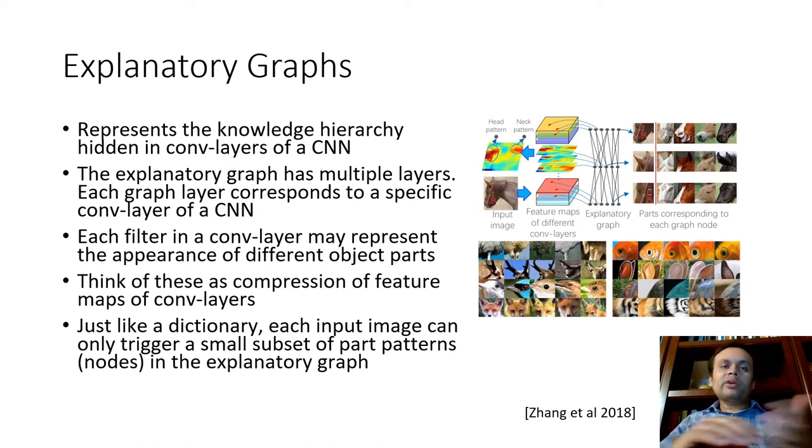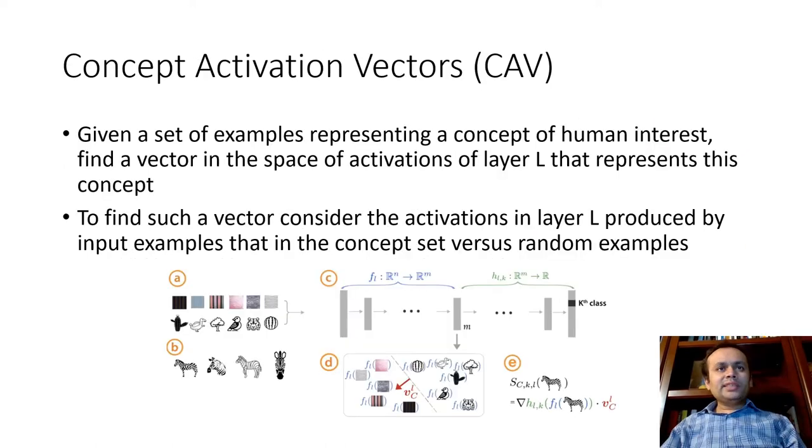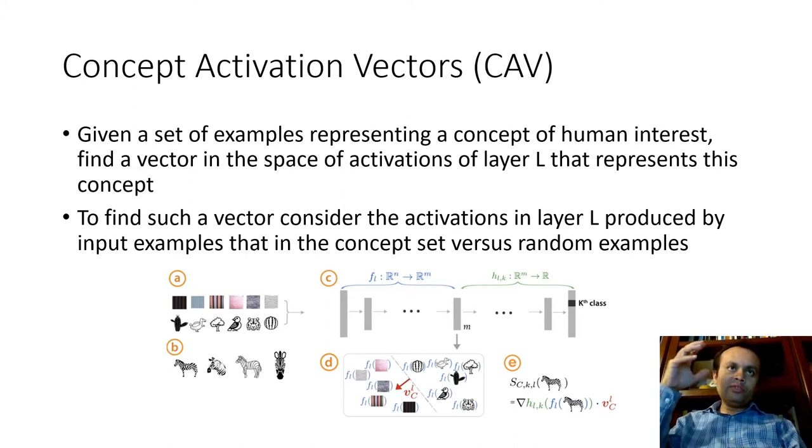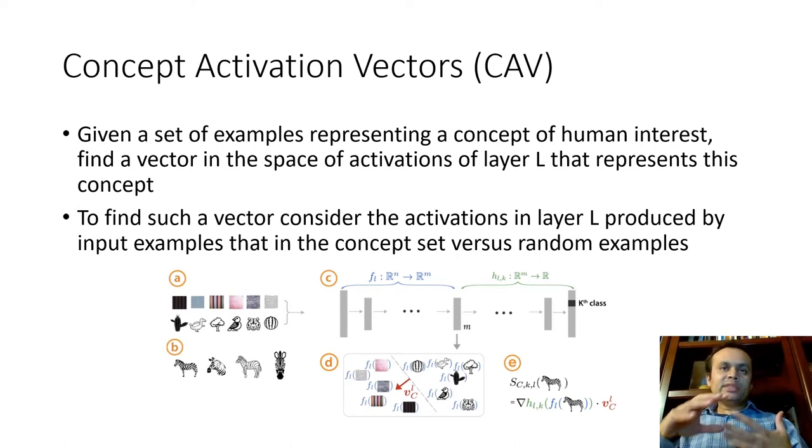A somewhat loosely associated concept is that of concept activation vectors. The idea is that given a set of examples representing a concept of human interest, we try to find vectors in the space of activation layers that represent this concept. And then we do that by contrasting that with examples chosen from a concept set versus random examples. And so the way that we identify these activation vectors is with respect to if they are relative activation with respect to the set of interests versus random examples.